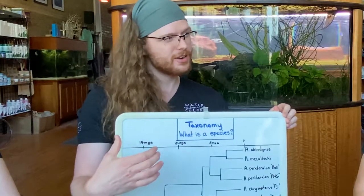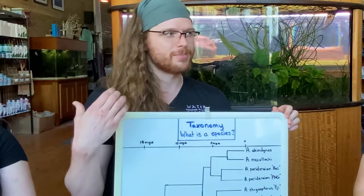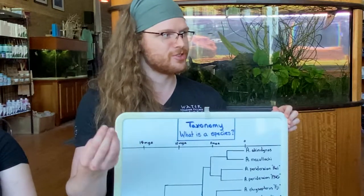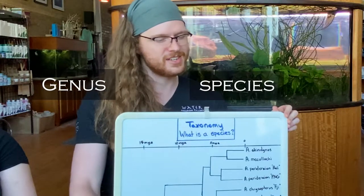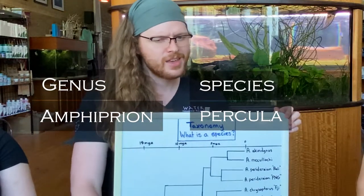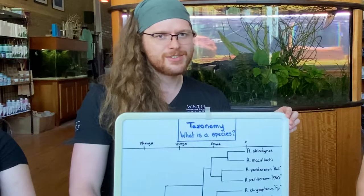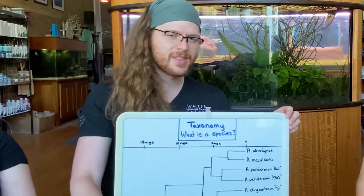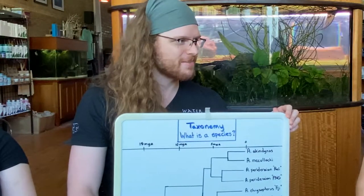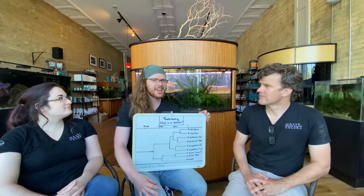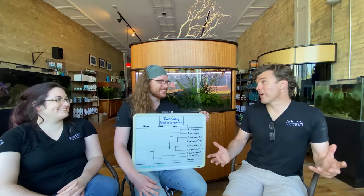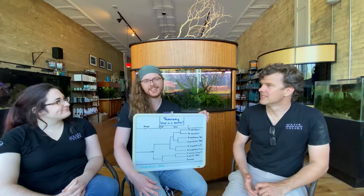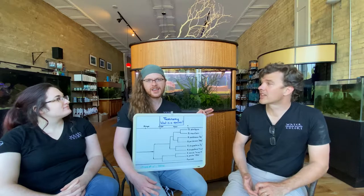Modern taxonomy is derived from Carl Linnaeus working with binomial nomenclature — genus, species, like Amphiprion percula. And then we quickly realized we need to go further than that. Then when genetics came out, we were all like, okay, we've got it all wrong. That messed everything up. Now we have infra orders and super orders and sub families and all sorts of messy clades and complexes.